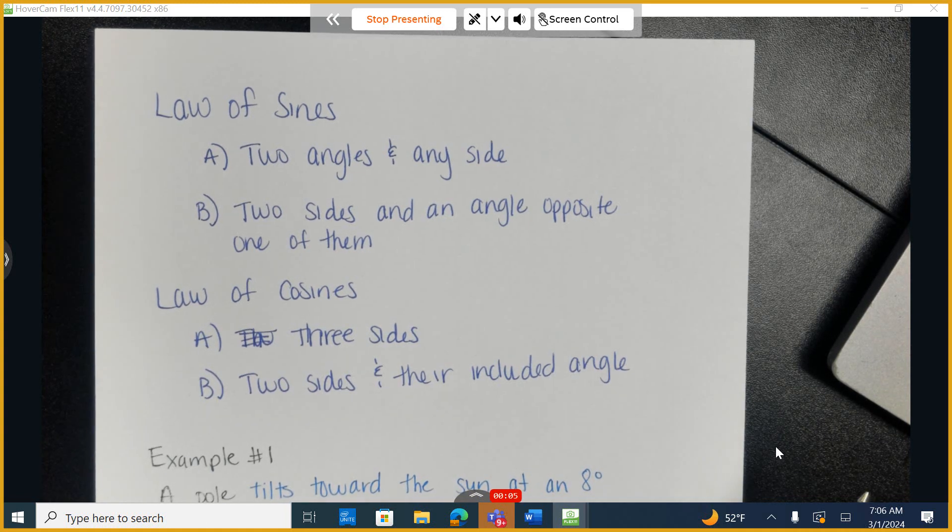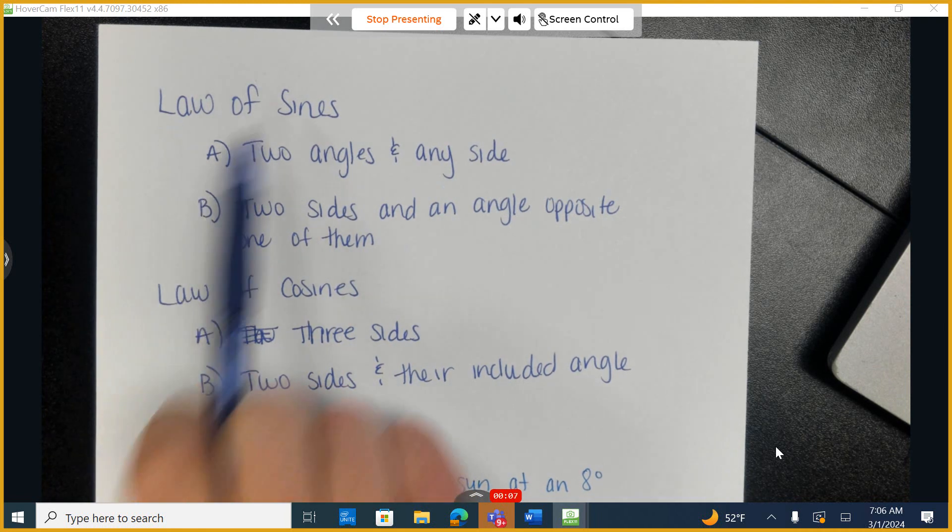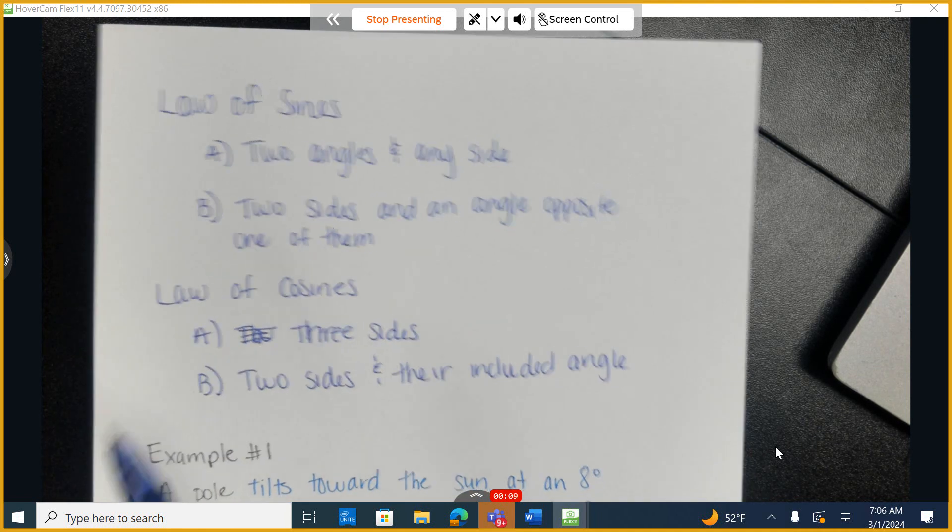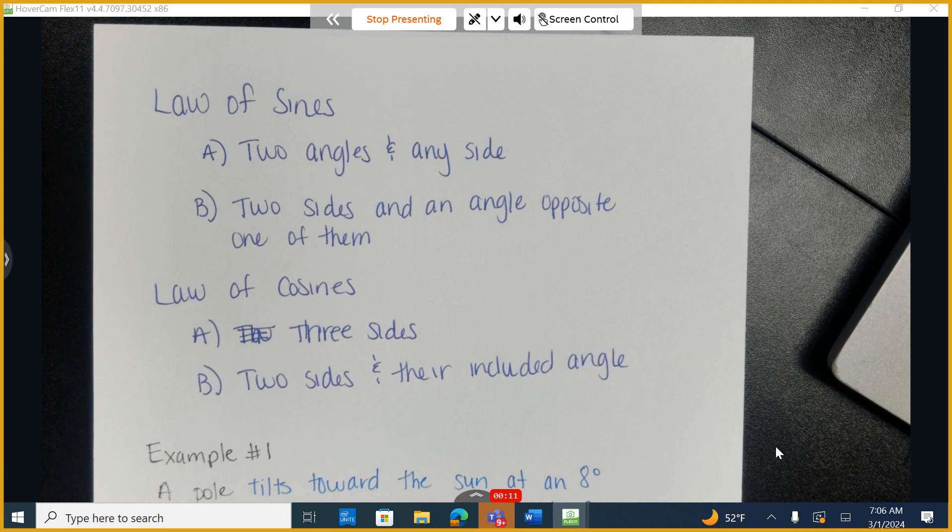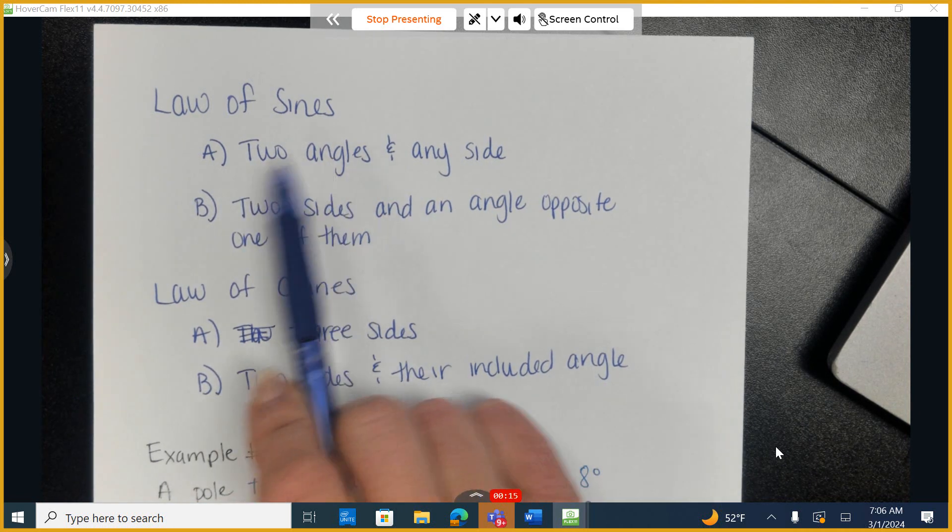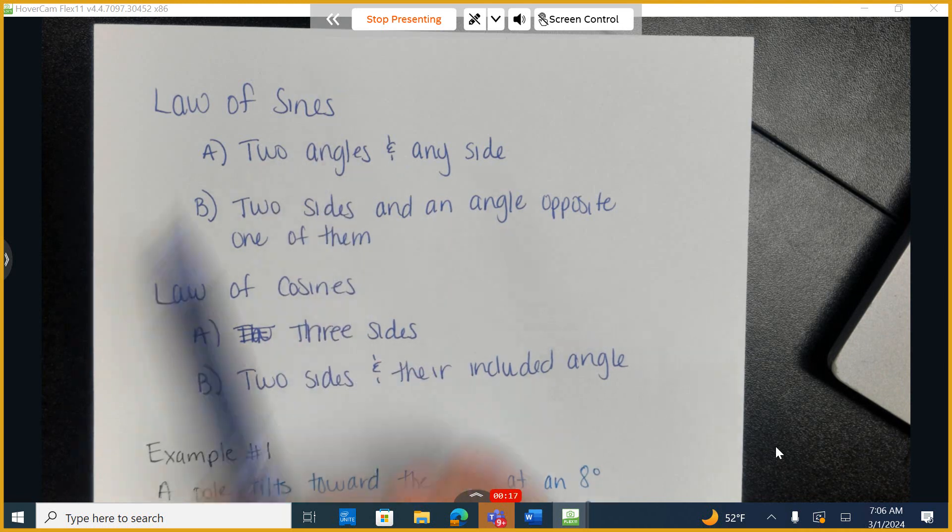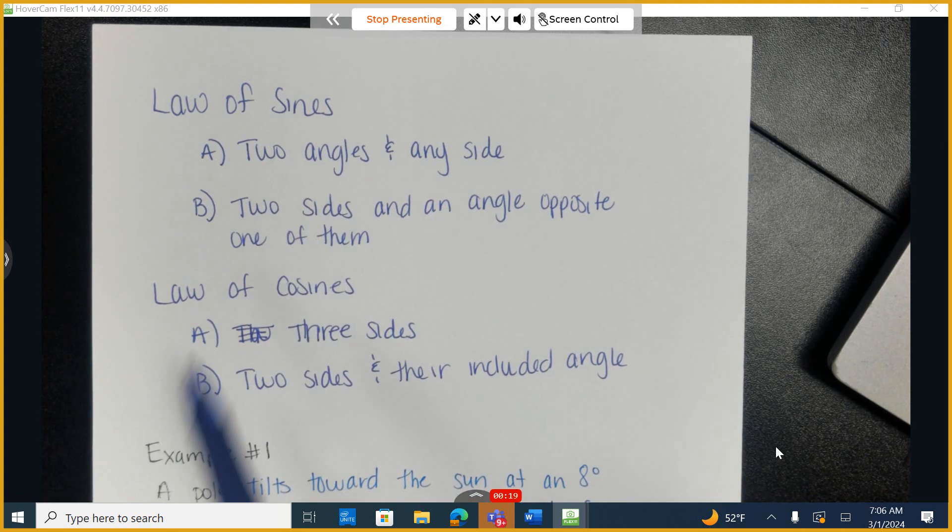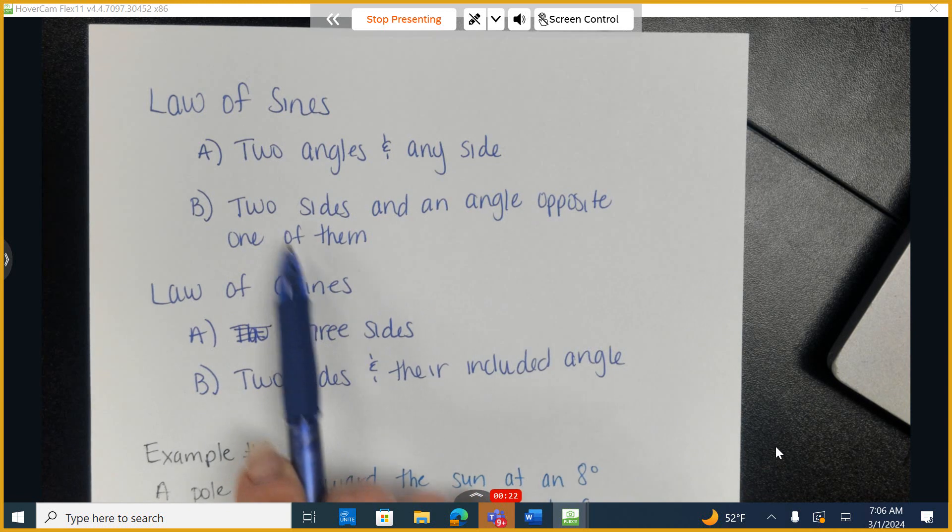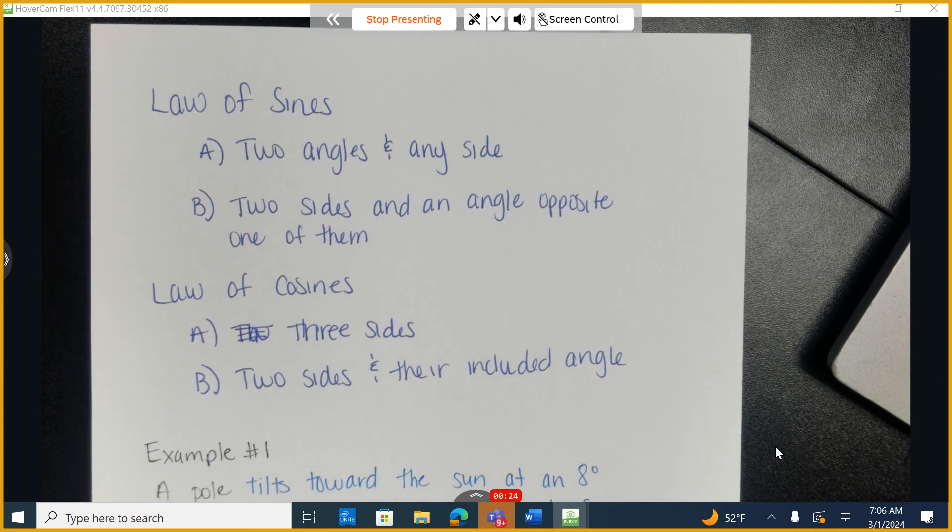A quick review of what we've already gone over in previous days. When do we use the law of sines and the law of cosines? If you're provided with two angles and any side, we'll use the law of sines. Again, we can quickly find the third angle by adding these up and subtracting from 180. When you're provided with two sides and an angle opposite of one of them, we will also use the law of sines.